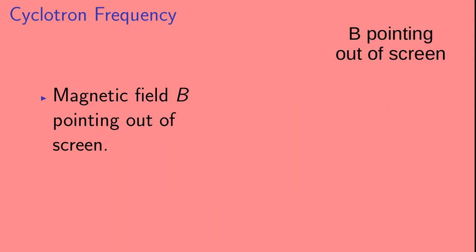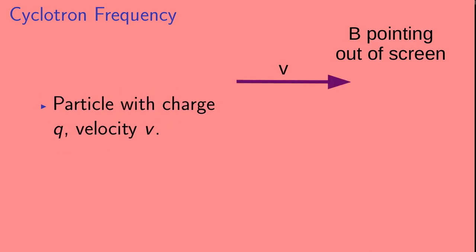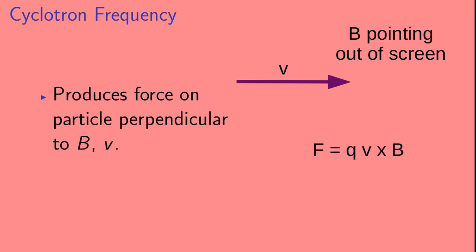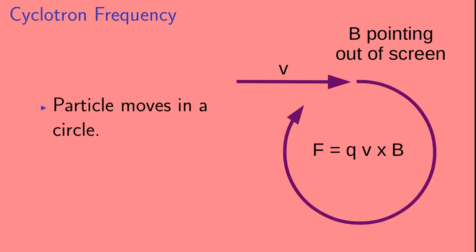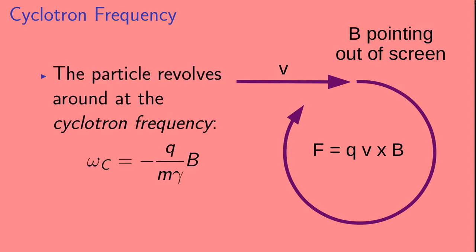This is not the only thing that happens to a muon in a magnetic field. The mu plus will also interact with the magnetic field in a way that doesn't involve the spin. Let's take a uniform magnetic field pointing out of the screen. We're going to send in a particle with charge q and velocity v. This will produce a force on the particle perpendicular to both the velocity v and the magnetic field B, causing the particle to move in a circle. The particle will revolve around at the cyclotron frequency, omega c.